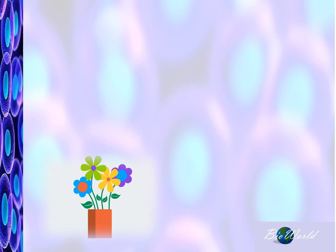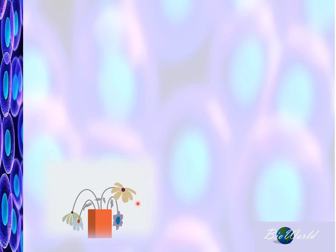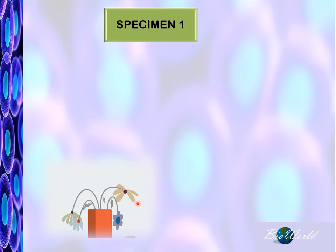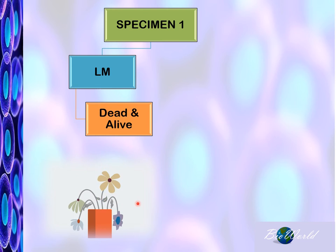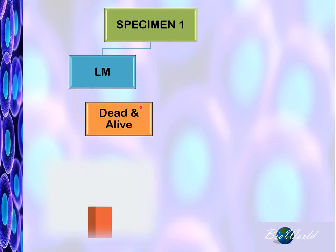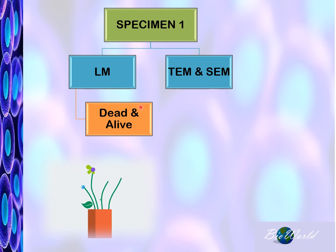As a difference in the images produced, even the preparation of the specimen is different between the light microscopes and the electron microscopes. For instance, in the light microscope, the specimen can be either dead or alive. But in the electron microscopes, the specimen must be dead.